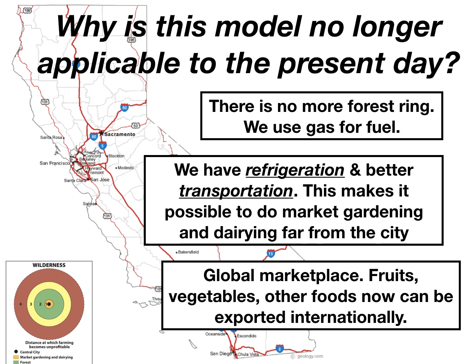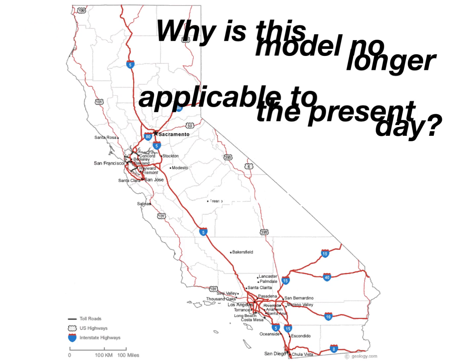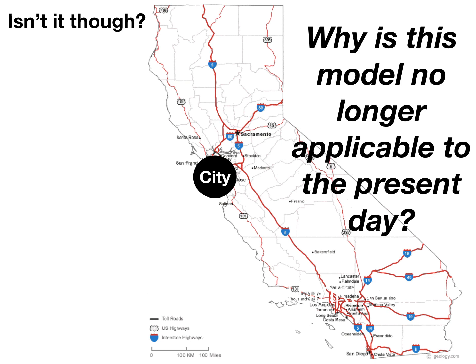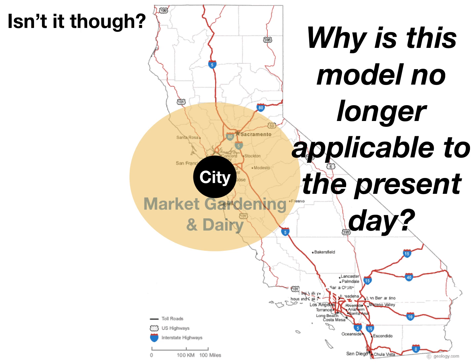When you go to the supermarket you're buying bananas from the Caribbean or Central America, or apples in wintertime imported from Chile. Looking at a map of California, with the Bay Area as the central city, we can see the von Thünen model still has some resonance on a larger scale: the North Bay and Watsonville area produce vegetables and strawberries in a market gardening ring, while the Central Valley overlaps with the extensive agriculture ring.